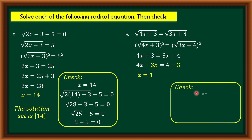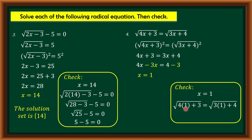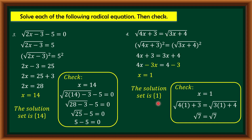Let us check using x = 1 in the original equation: square root of 4(1) plus 3 equals square root of 3(1) plus 4. Both sides give square root of 7 equals square root of 7. Since x = 1 satisfies the equation, the solution set for square root of 4x plus 3 equals square root of 3x plus 4 is {1}.